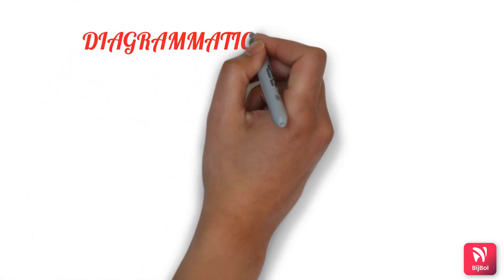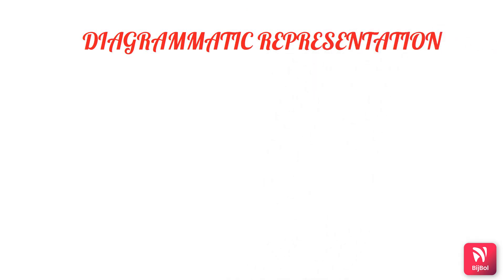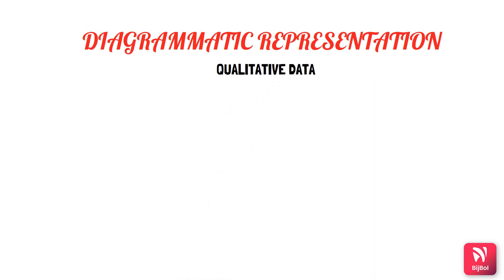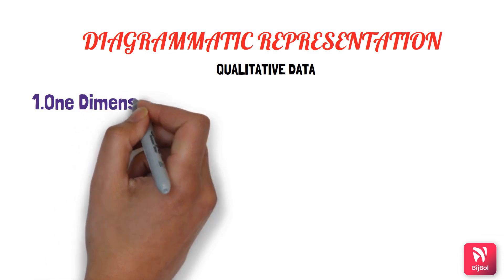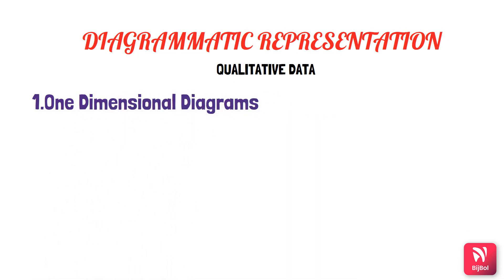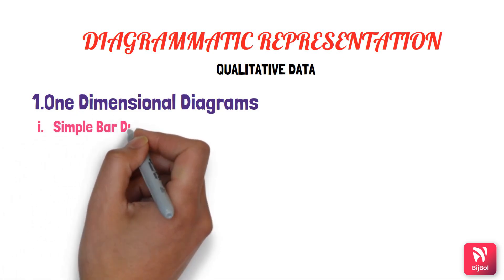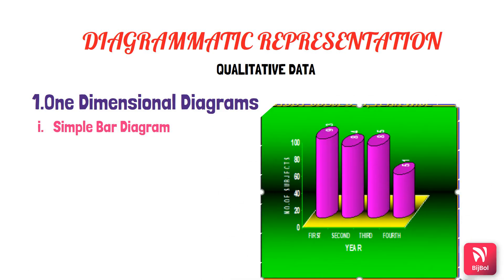The next thing is diagrammatic representation, which is most commonly used for qualitative data. Under this we have one-dimensional diagrams and two-dimensional diagrams. Under one-dimensional diagrams we have bar charts. The first is the simple bar chart, which represents a single variable — here BDS students divided based on the year in which they are studying.